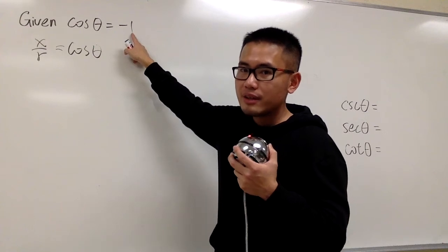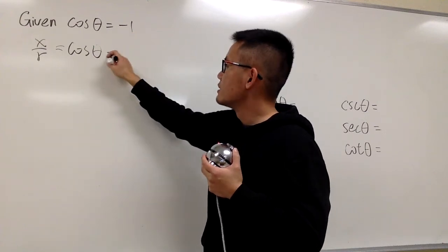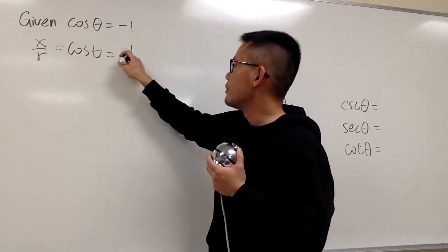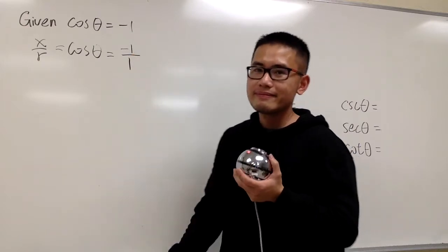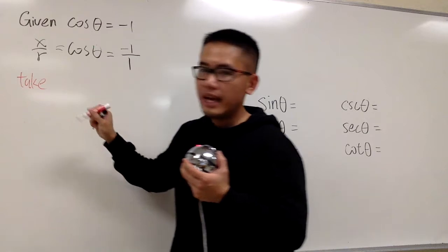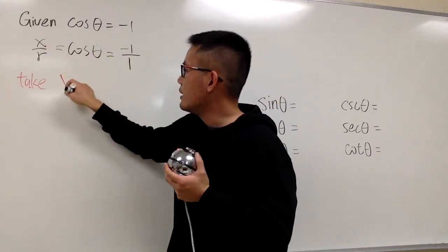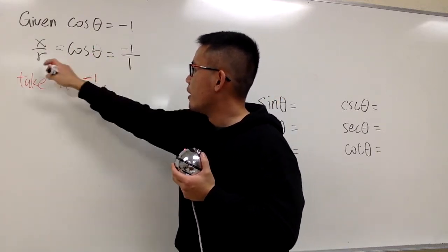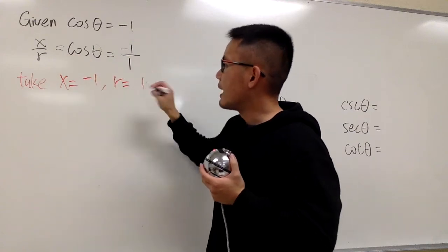We should look at this as a fraction, but r is always positive. So let's look at this as negative 1 on the top over positive 1. Because once we have this, we can say, let's go ahead and take x equals to negative 1, and r equals to positive 1.